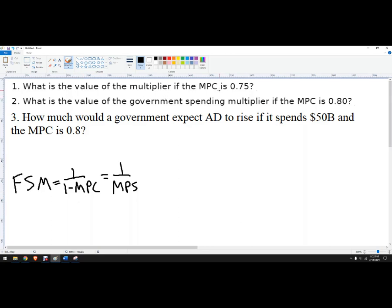So the value of the multiplier if the MPC is 0.75. You can always know that the MPC plus the MPS has to equal 1. So the MPS is 1 minus the MPC.